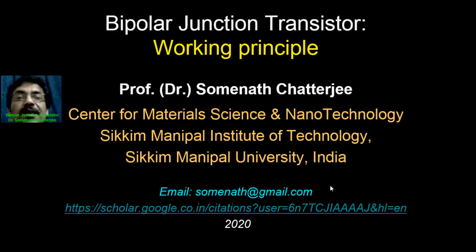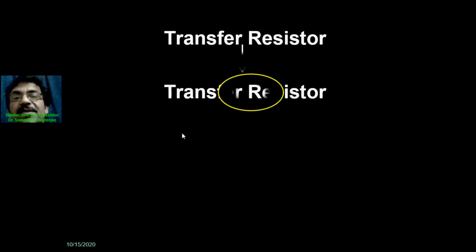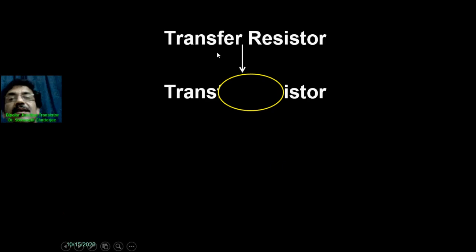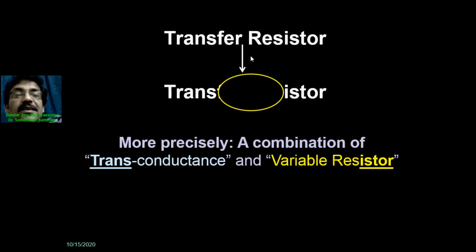Here the working principle — first, what is the literal meaning of transistor? The transfer of resistor is basically the transistor. It is coming from two words: one is 'transfer of' and the other is 'resistor.' More precisely, we can say it is a combination of transconductance and variable resistor.